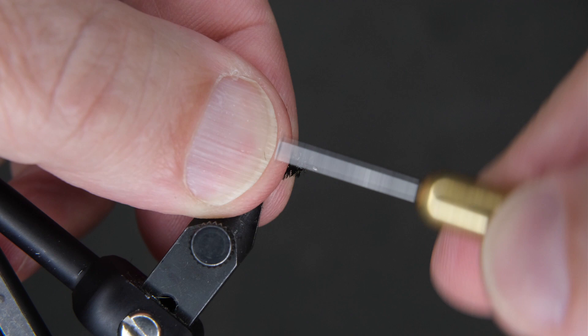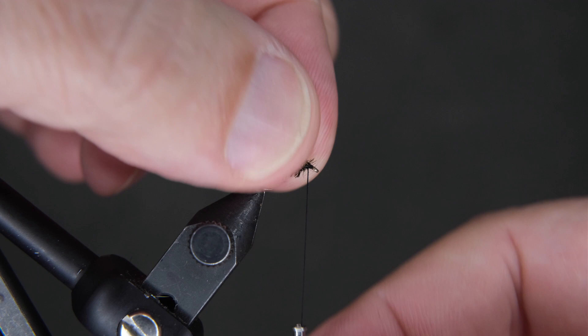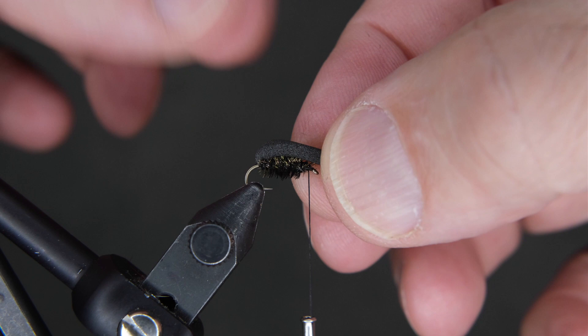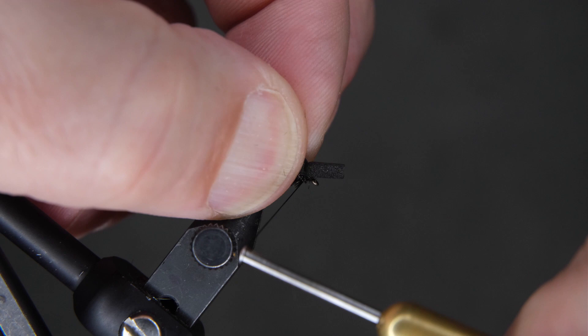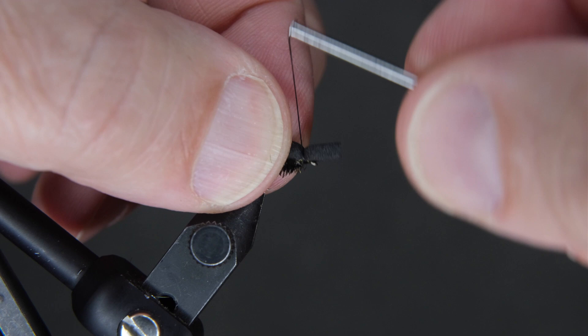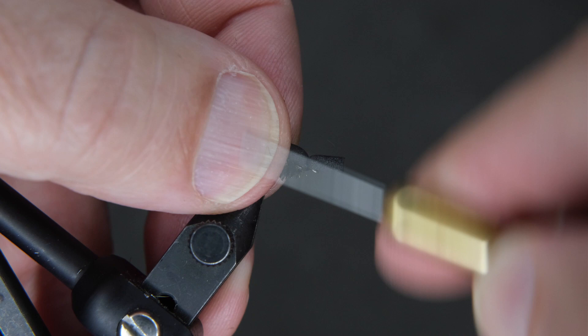Now take your foam and we're going to lay it over the top again where you want it, and then give it a nice pinch. Bring the thread over the top, two or three wraps. You're going to pull straight up on this, get it where you want it, and then pull up to tighten it. Get it where you want, three or four more wraps around, secure it in place.